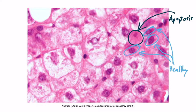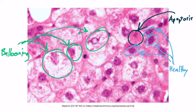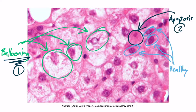Lastly, over here you can see the ballooning of some of the hepatocytes, which is also seen on liver biopsy and is associated with those councilman bodies. The hepatocyte swells, or balloons — that's part one — and then it undergoes apoptosis and dies — part two — leaving behind this eosinophilic councilman body.